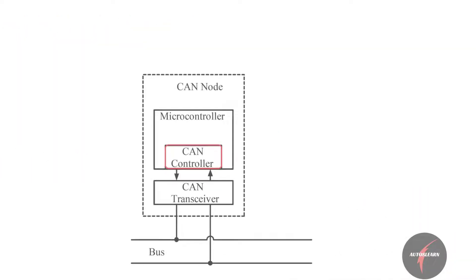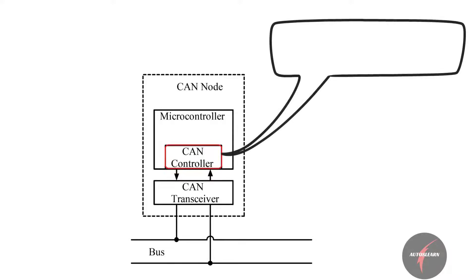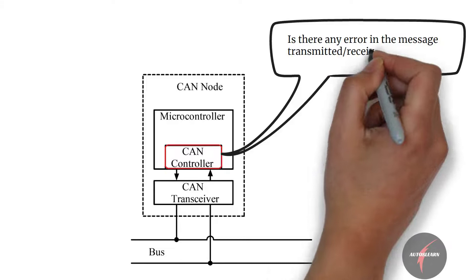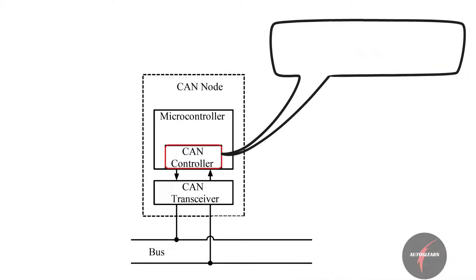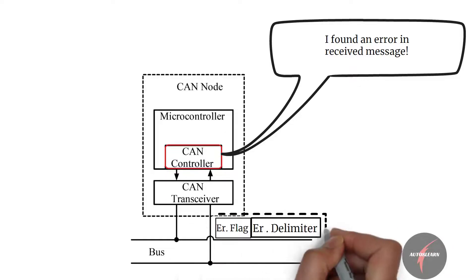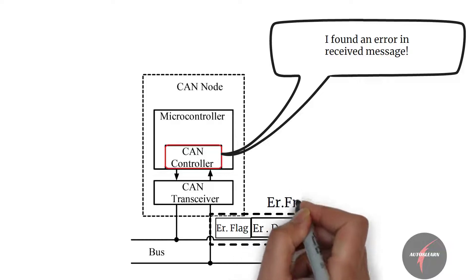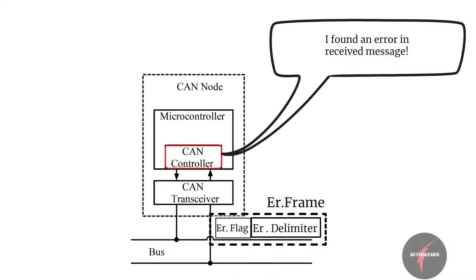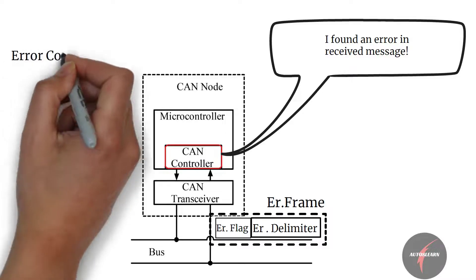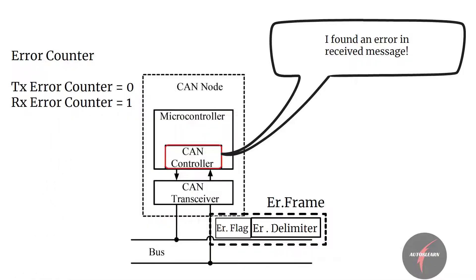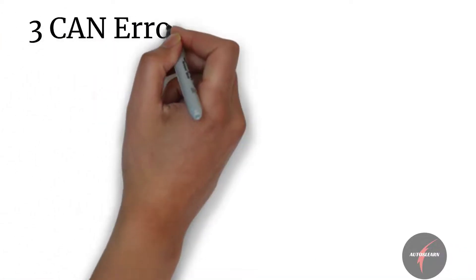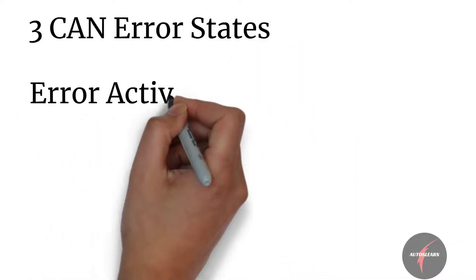Every CAN controller in the CAN bus tries to detect errors within a message, as error handling is built into the CAN protocol. If the node finds an error, the discovering node transmits something called an error flag and error delimiter, which constitute the error frame, thus destroying the bus traffic. The CAN node uses specific error counters to detect faults and perform error confinement.